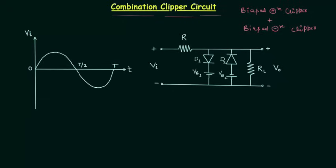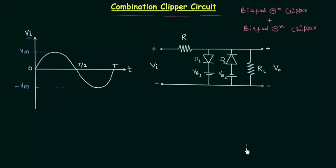I will analyze this circuit and try to obtain the output waveform for the sinusoidal input. Vi is the input voltage and Vm is the maximum or peak value of input voltage; for the negative half, minus Vm is the peak voltage. This resistance is the series resistance and this is the load resistance. Series resistance is much smaller compared to load resistance, so the drop across the series resistance is nearly equal to zero.